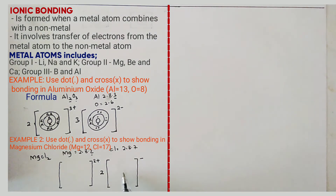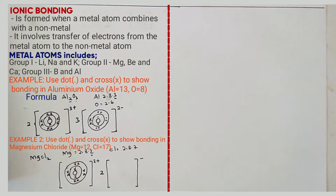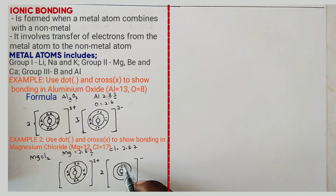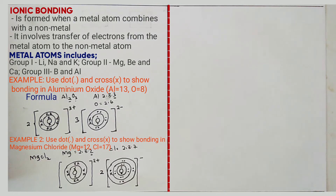If crosses are used for magnesium, dots are used for chlorine. Magnesium loses 2 electrons, so its ion configuration is 2.8. Draw the nucleus, then the first energy level with 2 electrons, and the second energy level with 8 electrons. Then for chlorine, draw 2.8.7 using dots: first energy level 2 dots, second energy level 8 dots, third energy level 7 dots. Then 1 electron gained from magnesium is shown as 1 cross. That is using dots and cross to show ionic bonds.